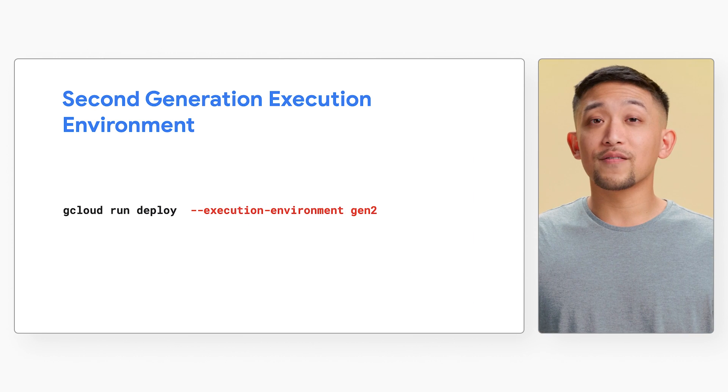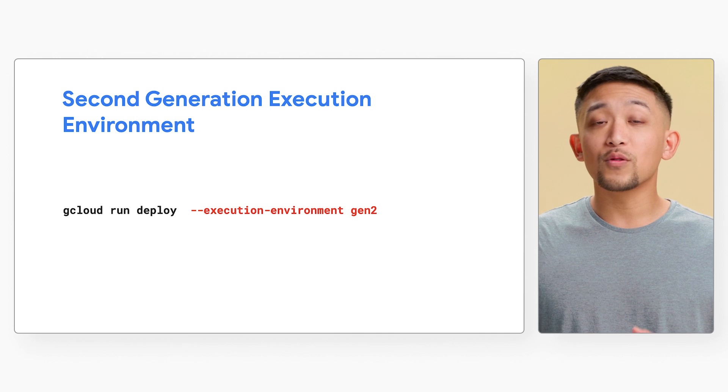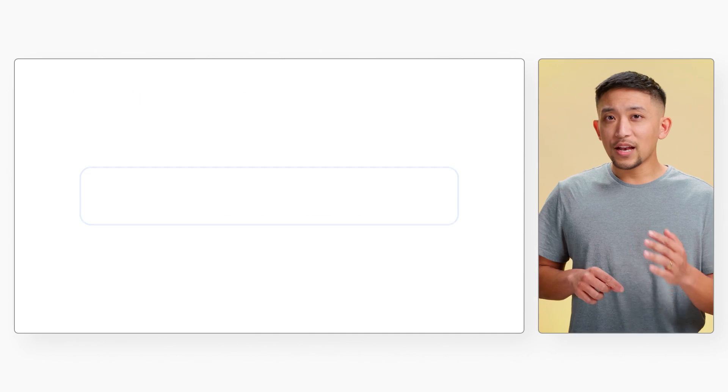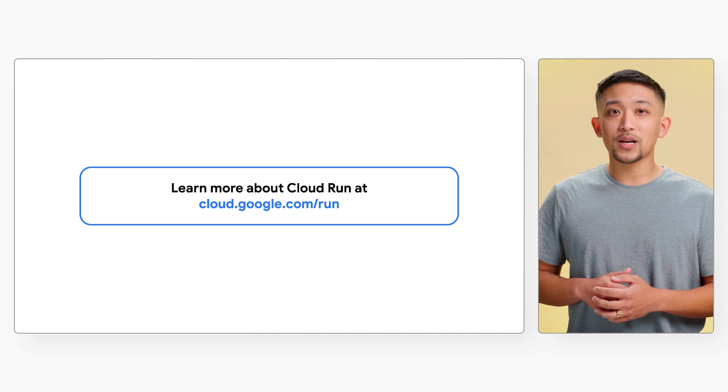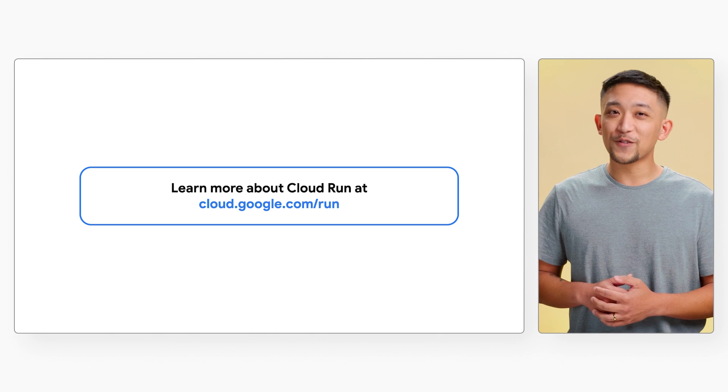Taking advantage of all the benefits of the second generation execution environment is baked into a simple argument you provide when deploying to Cloud Run. With these two features, we're enabling more kinds of workloads to do amazing things in Cloud Run, moving serverless forward. To try out Cloud Run jobs or the new Cloud Run second generation environment, check out the documentation in the description below. And if you want to be notified of what the Cloud Run team comes up with next, be sure to like and subscribe to the Google Cloud Tech channel for future updates.